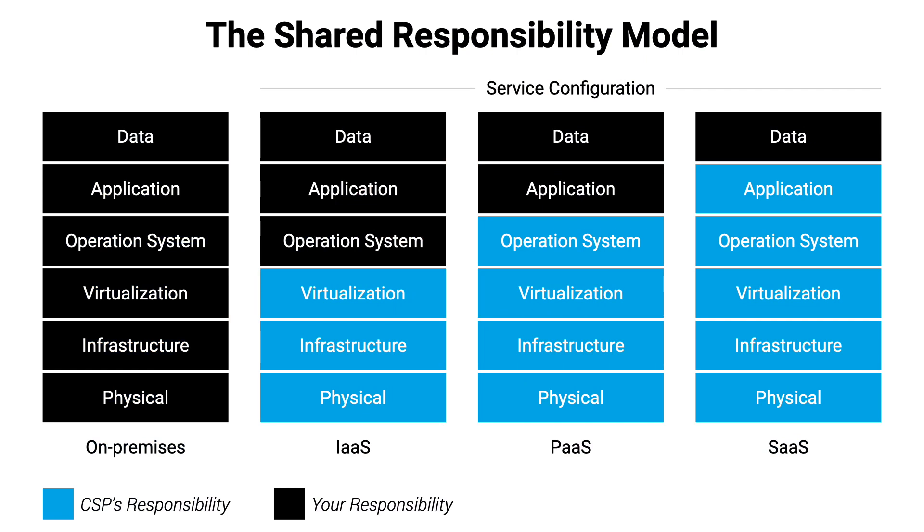The shared responsibility model does more than just dictate how operations and security works in the cloud — it's also a guide on how to maximize the value you're getting from building in the cloud. Where possible, you should be choosing services that are towards the right side of this model. A lot of the time, these services are tagged with words like SaaS, managed, or even serverless. The cloud service provider is doing more of the work, and getting the CSP to do more of that undifferentiated work on your behalf is always a win — it allows you to focus your time and effort on delivering direct business value.